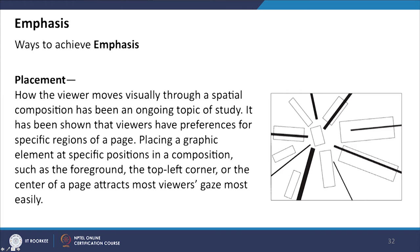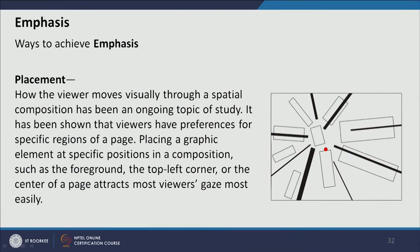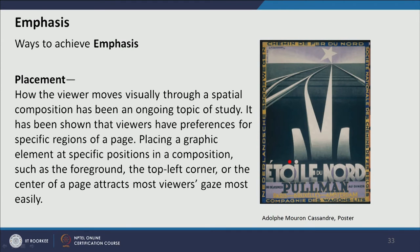Another way to achieve emphasis is placement. In this example, all the shapes direct toward a particular shape — the rectangle gets emphasis because of its position and because all other rectangles point toward it. In the poster designed by Adolf Miron, all lines direct toward the star, so the star gets emphasis. The star's color contrast and area are not large, but because of the placement as an advantageous focal point, the star gets the first emphasis in the poster.